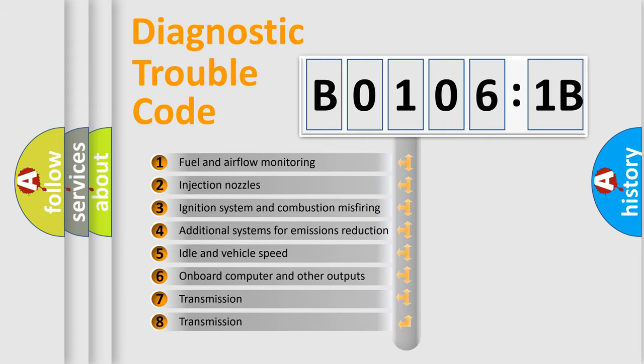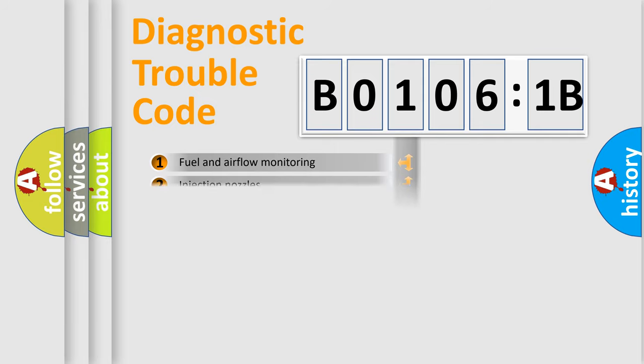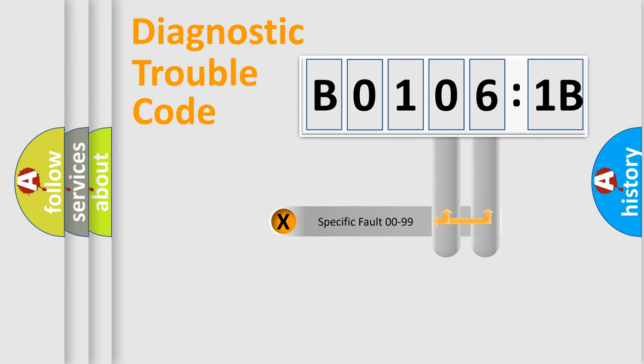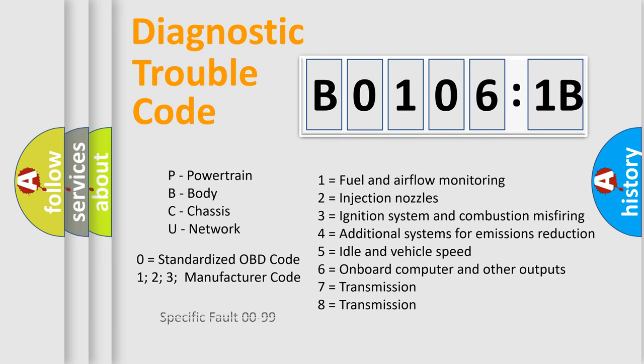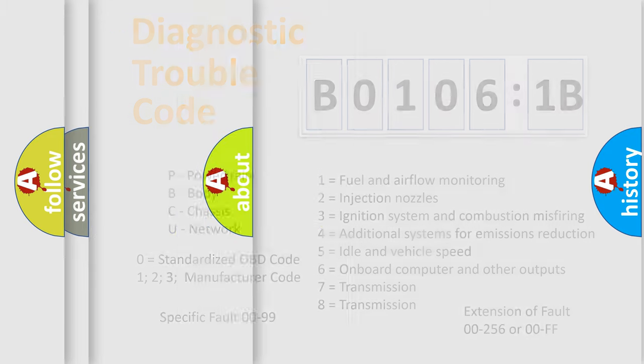The third character specifies a subset of errors. The distribution shown is valid only for the standardized DTC code. Only the last two characters define the specific fault of the group. The add-on to the error code serves to specify the status in more detail, for example, a short to the ground. Let's not forget that such a division is valid only if the second character code is expressed by the number 0.